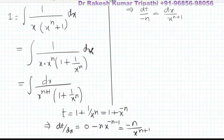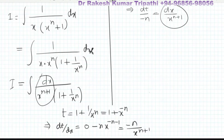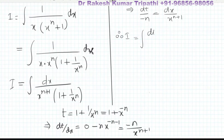So dx upon x to the power n plus one appears in the integral. Both the numerator expression and our substitution give dx/xⁿ⁺¹, so dx/xⁿ⁺¹ can be replaced by dt/(−n). The integral I becomes dt/(−n) — that is the value of dx/xⁿ⁺¹ — and in the denominator, 1 + 1/xⁿ is there, which we have substituted as t.